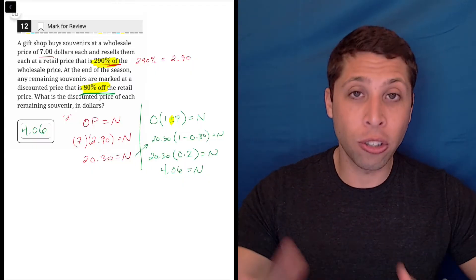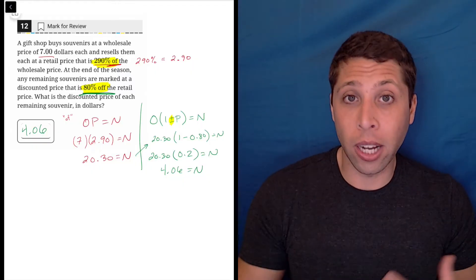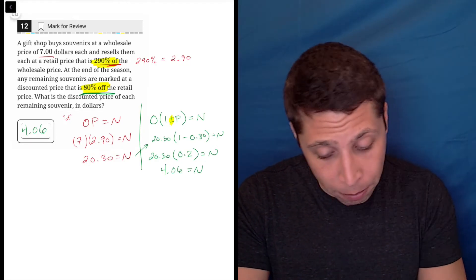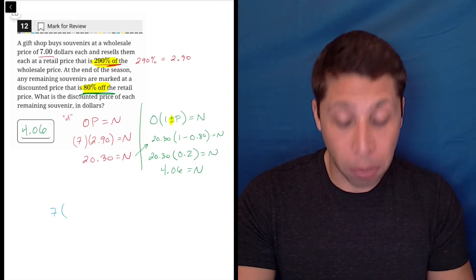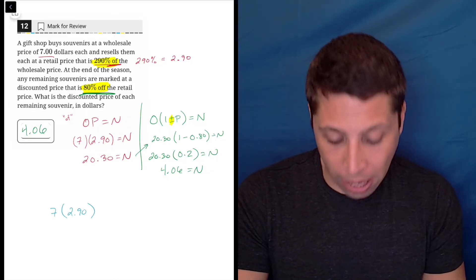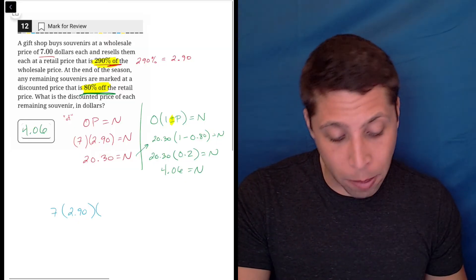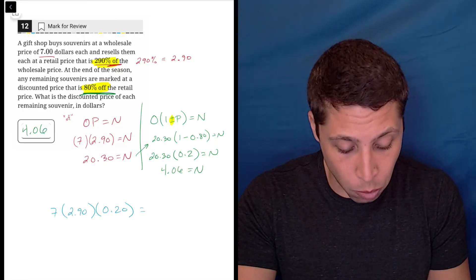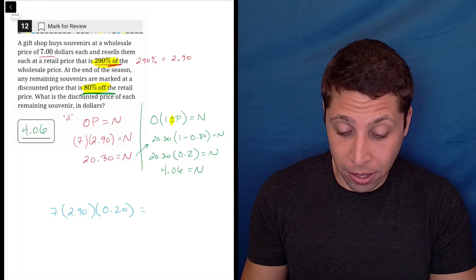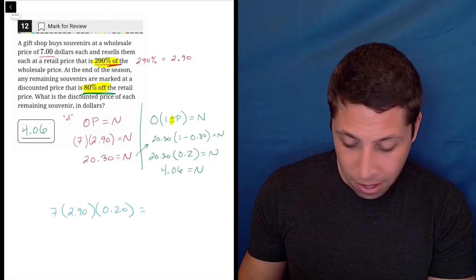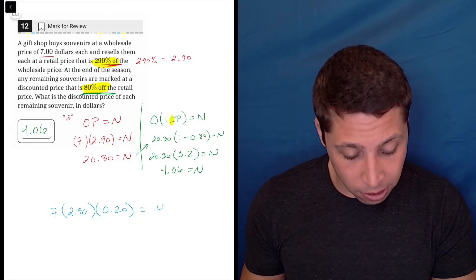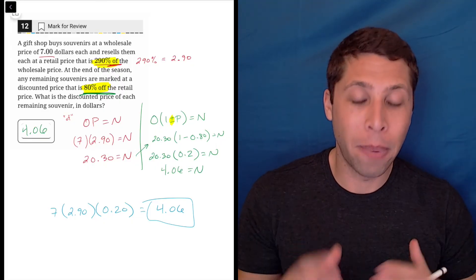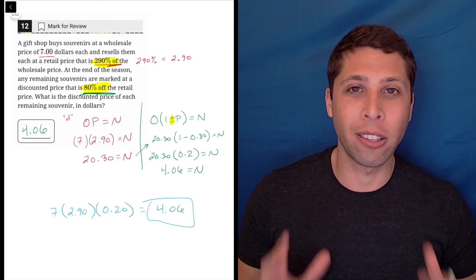But because percentages are also all about multiplication, what I would have done if I were doing this question myself during a test is I would have done all this at once. I would have taken my original, which is seven dollars, I would have known to multiply it by 290%, and at the same time I also know 20% off, or 80% off, is going to be another 20%. So I can do both percentages at once. And so if you want to follow me and trust me here, seven times 2.9 times point two is still four dollars and six cents. So percentages do kind of work together in nice ways. But for the sake of really explaining how these formulas work, I wanted to show you them separately.